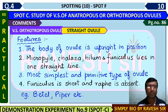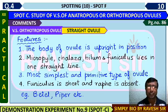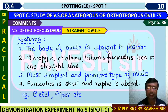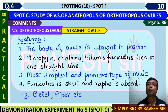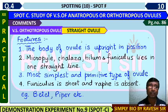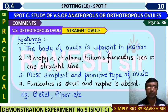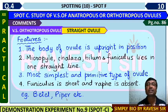For VS of orthotropos ovule (straight ovule): the structure of the ovule is upright and straight. Micropyle, chalaza, hilum, and funicle all lie in one straight line. It is the most simple and primitive type of ovule. In angiosperms, the ovule is straight, which is why the funicle is shortest and the raphe is absent. Examples: Betel, Piper, and Polygonum types of ovule are orthotropos.